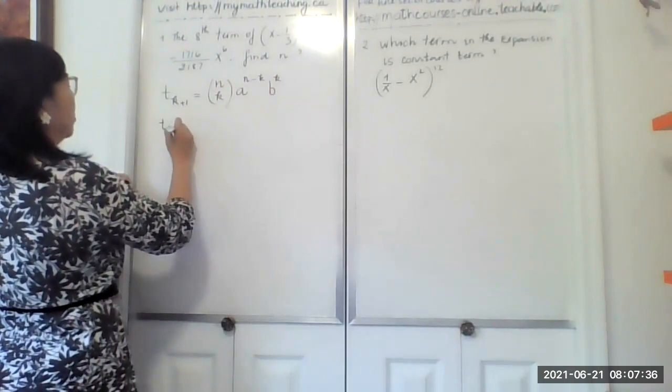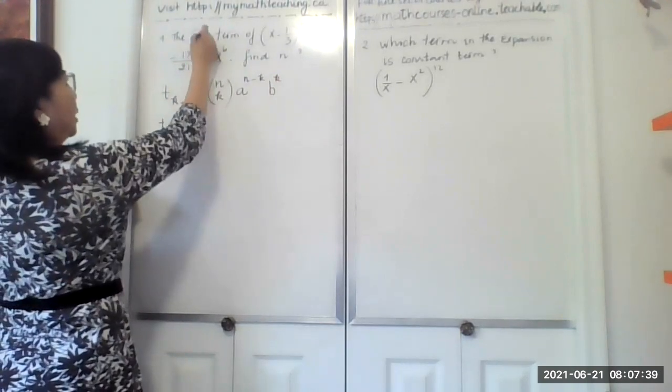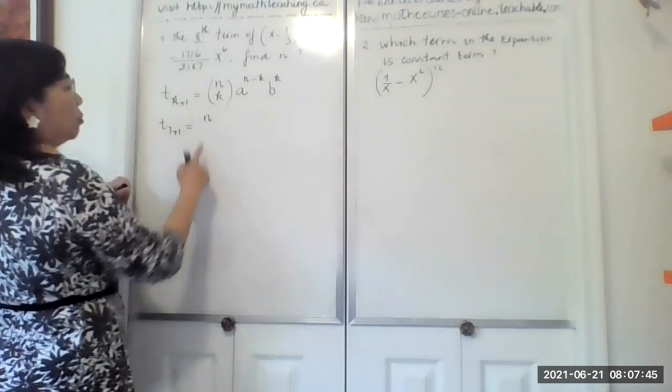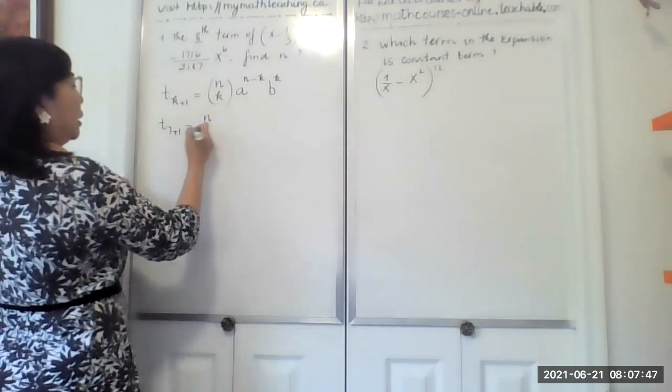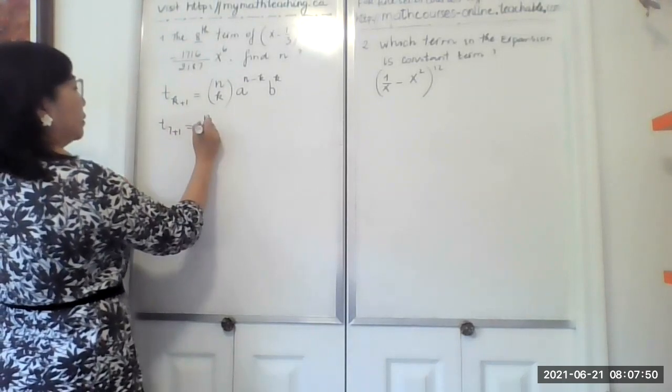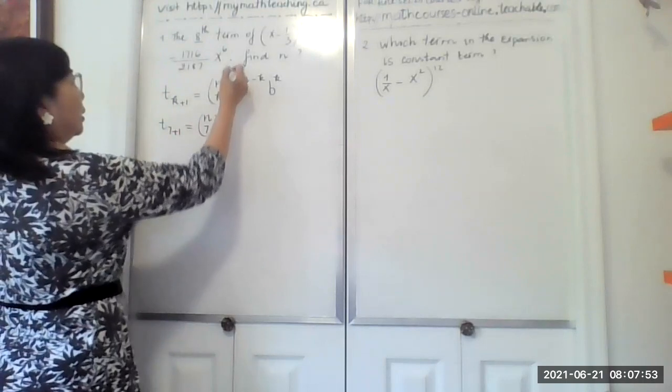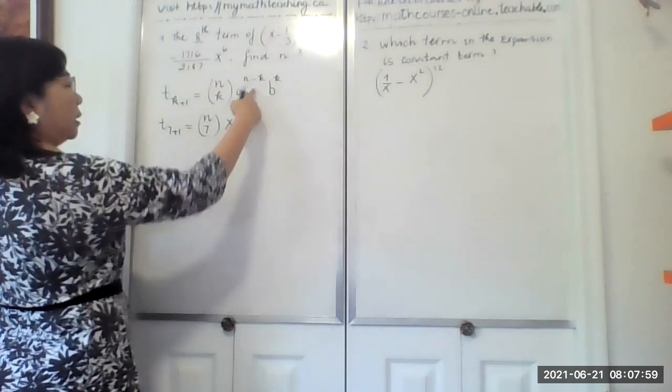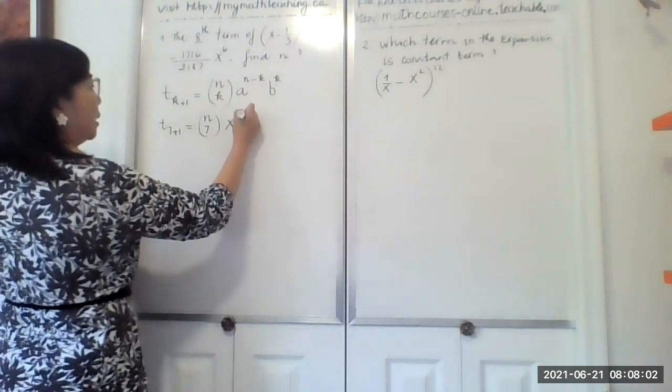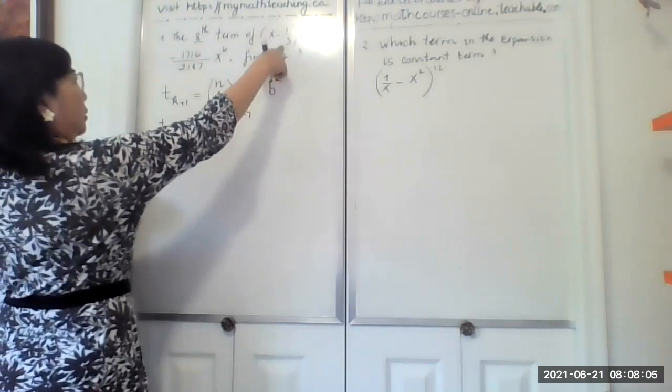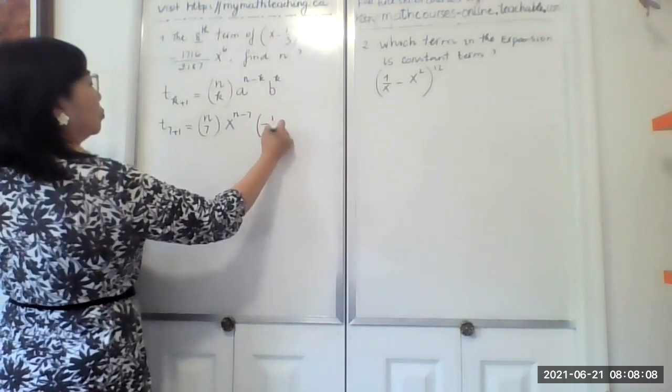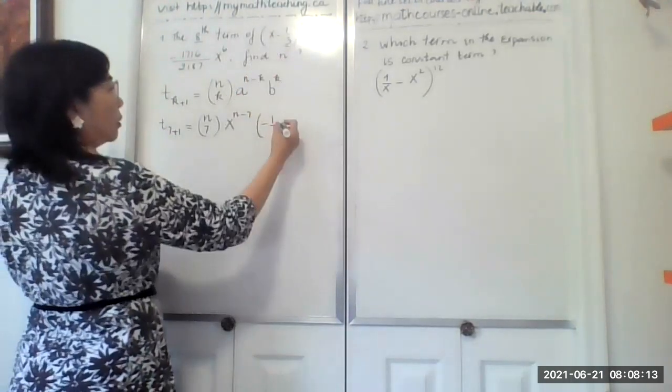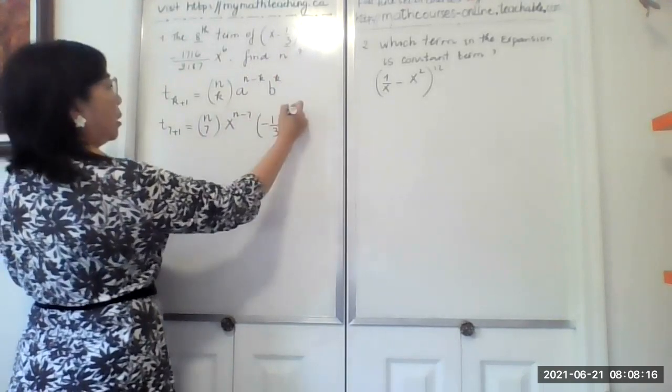We have t sub 7 plus 1, which equals t sub 8. And n choose 7, our k is 7, so n choose 7. Then our first term is x to the power n minus k, and our k is 7, so this will be n minus 7. And the next will be minus 1 over 3, that's the second term, to the power of k which is 7.